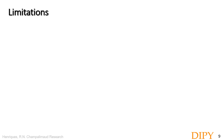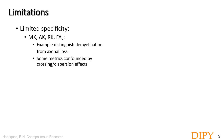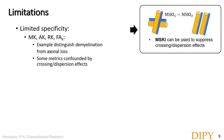Just to mention some limitations of DKI: as it is a phenomenological model, it does not reveal direct biological properties and has limited specificity. For example, in studies of degenerative processes, kurtosis changes cannot be directly linked to specific effects — for instance, distinguishing myelin loss from loss of axonal density. Another limitation is that, like standard diffusion tensor metrics, some kurtosis tensor metrics can be biased by confounding crossing fiber effects. This, however, does not apply to the mean signal kurtosis technique, as explained during this talk.